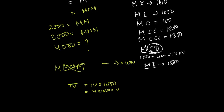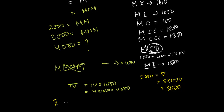Similarly for 5000, we write V with a bar over it — V times 1000 equals 5000. For 10,000 we write X with a bar, which is 10 times 1000 = 10,000. We generally don't deal with these larger numbers very often.